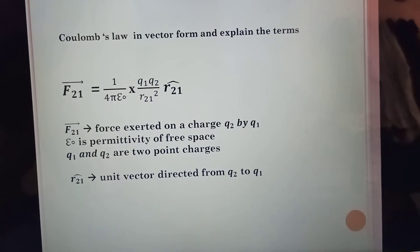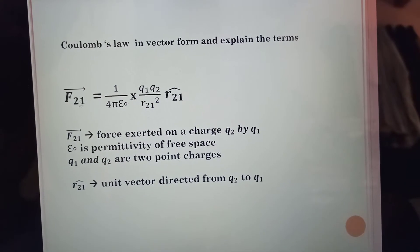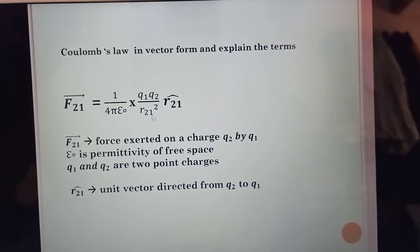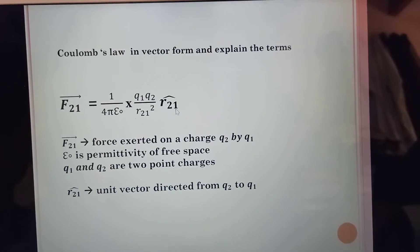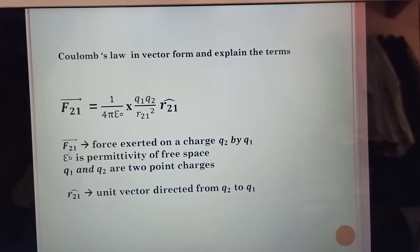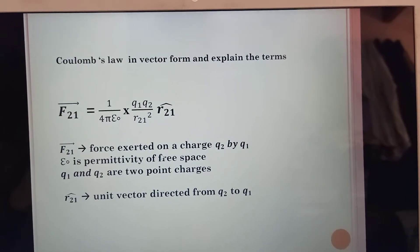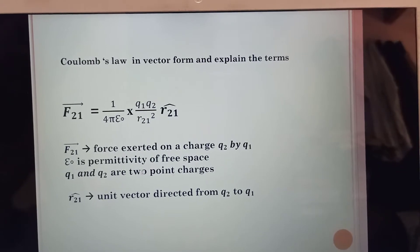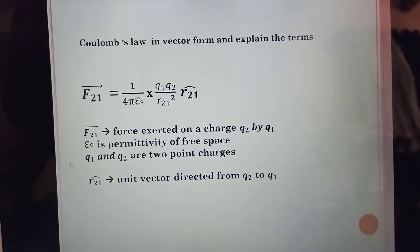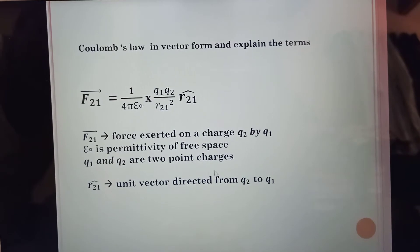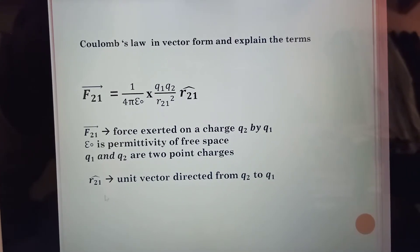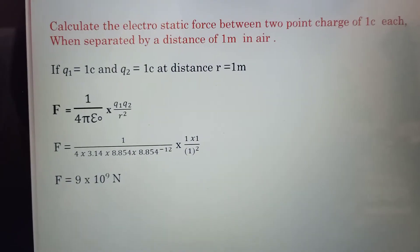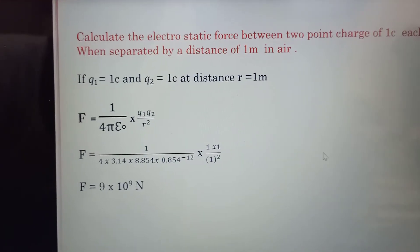Coulomb's law in vector form: vector F₂₁ = (1 / 4πε₀) · (Q1·Q2 / R₂₁²) · R̂₂₁. Where vector F₂₁ is the force exerted on charge Q2 by charge Q1. ε₀ is the permittivity of free space. Q1 and Q2 are the two point charges. The unit vector R̂₂₁ is directed from charge Q2 to Q1.